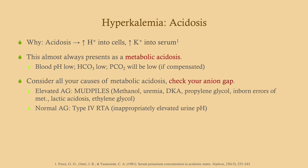In acidosis, acid is pulled into the cells and in exchange potassium is kicked out into the serum, causing hyperkalemia. This almost always presents as a metabolic acidosis. If very mild it may cause no symptoms; if severe, look for Kussmaul breathing or tachypnea as the body lowers PCO2 to compensate. Consider all causes of metabolic acidosis and look at the anion gap — if elevated, look for MUDPILES causes. If you have a normal anion gap with hyperkalemia, type 4 renal tubular acidosis is the one RTA that causes it.